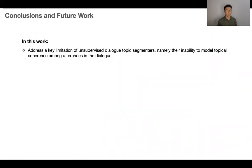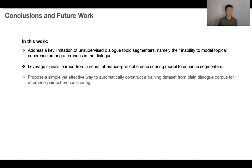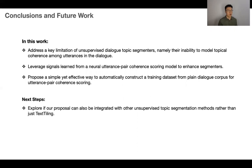This paper addresses a key limitation of unsupervised dialogue topic segmenters, namely their ability to model topic coherence among utterances in the dialogue. To this end, we leverage signals learned from a neural utterance pair coherent scoring model. We also propose a simple yet effective way to automatically construct a training dataset from any source dialogue corpus. For the future, we plan to explore if our proposal can also be integrated with other unsupervised topic segmentation methods like GraphSEC and BioSEC rather than just text tiling. Furthermore, we also plan to explore effective strategies to incorporate external common-sense knowledge into topic segmentation.